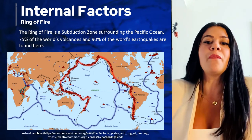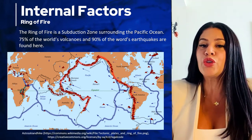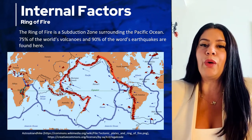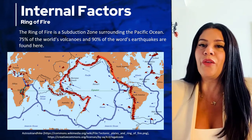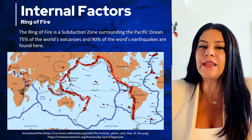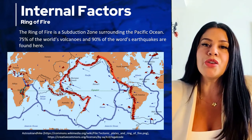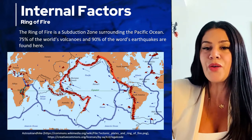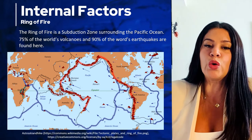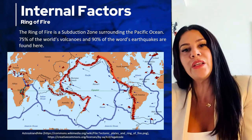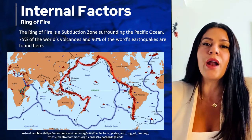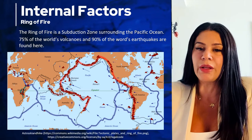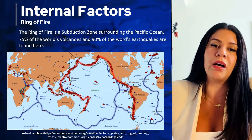During subduction, some of the mantle melts, rises to the surface, and creates a volcano. This is why areas where oceanic plates are colliding with other plates often have volcanoes. The Caribbean Islands are an example of a subduction zone. The largest subduction zone in the world is the Ring of Fire, which surrounds the entire Pacific Ocean and includes the western coast of North and South America and the eastern portion of Asia. There are over 400 active volcanoes in the Ring of Fire — 75% of the world's volcanoes and 90% of the world's earthquakes are found there.